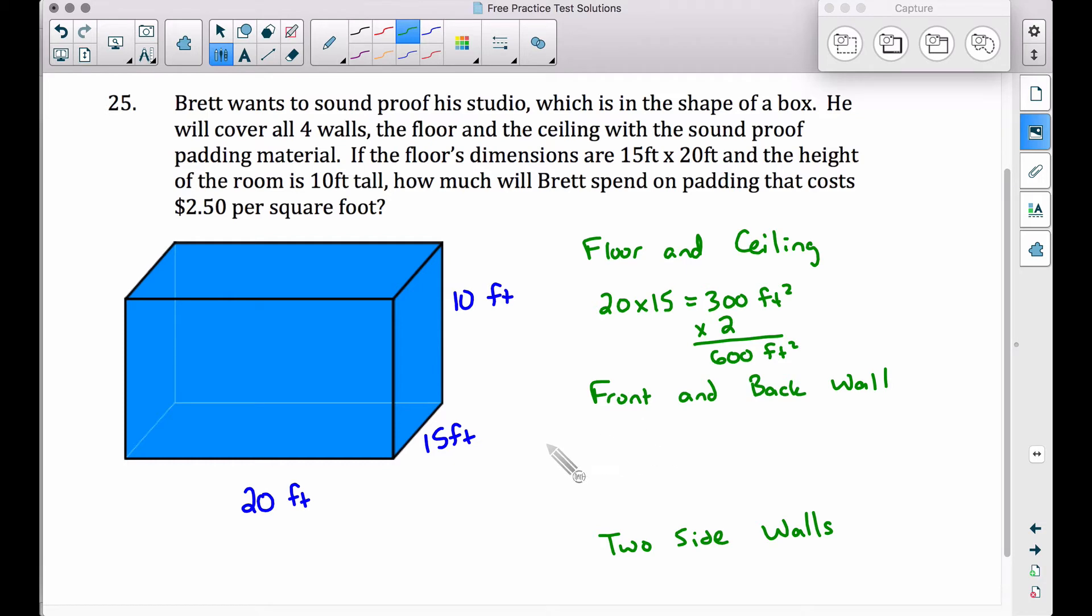The front and back wall, this front wall is what I'm talking about right here, and then this one back here in the back, that's the same thing as the front. Same concept, but make sure you get your dimensions correct. This front wall that you see right here is going to be 20 by 10 because we're using the height. So the area of the front wall is 20 times 10, which is 200 square feet.